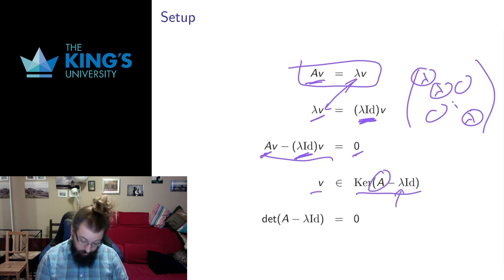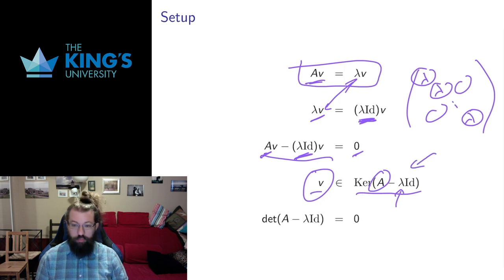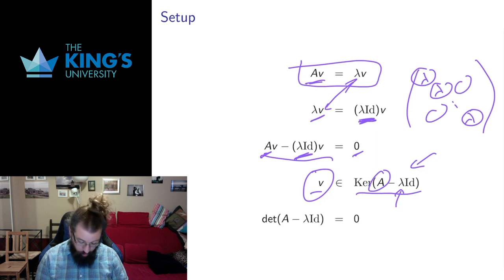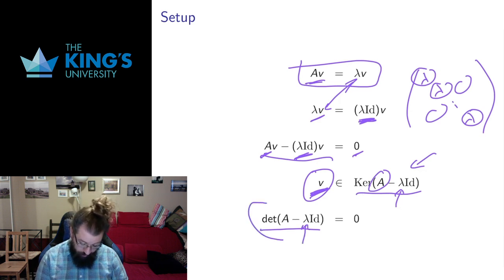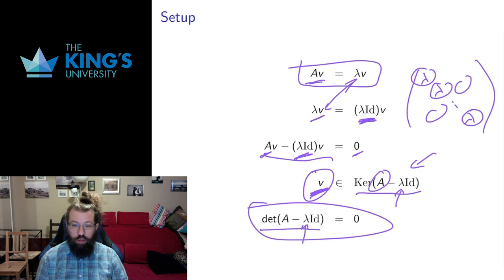Since v is non-zero, that kernel needs to be non-trivial. From our properties of invertible matrices, a non-trivial kernel means the matrix is not invertible, which means it has determinant equal to zero. So in order for this to work, the determinant of A minus lambda identity must be zero. The values of lambda that make this determinant zero are going to be the eigenvalues.